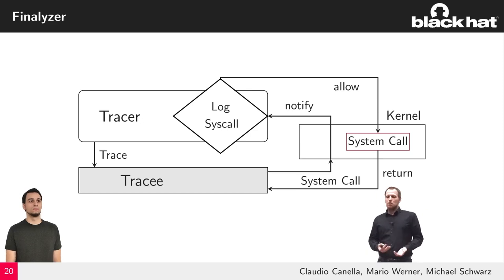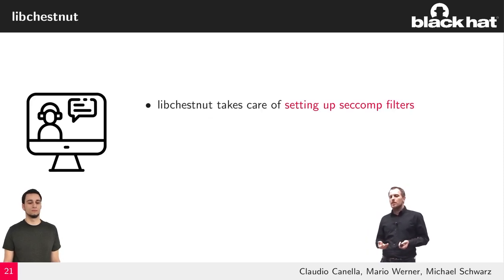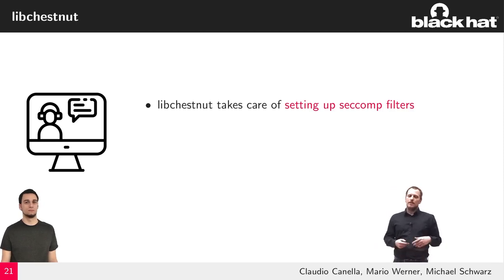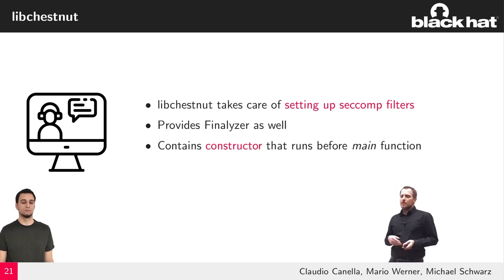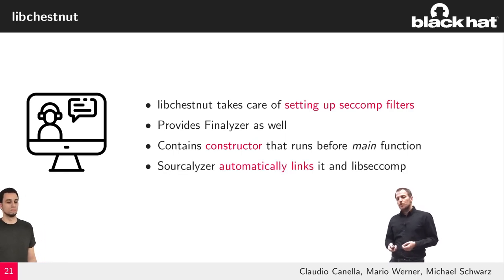When we look at where we implemented that, we basically designed a new small utility library called libchestnut. This library is in charge of setting up seccomp filters on application start, and it also implements this Finalyzer approach. The way it works is it registers a constructor function, like in a C++ program, but in this case in a C program, which is automatically called on program startup, and in this constructor we set up the seccomp filters. Additionally, Sourcealyzer automatically links to this library, so all you have to do is use the sandboxing flag of the compiler, and you get the completely protected binary at the end.